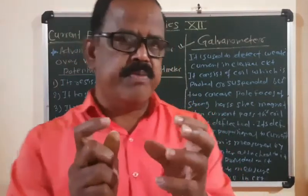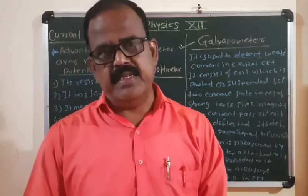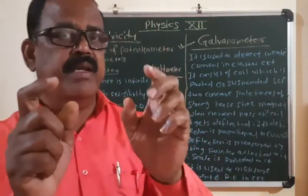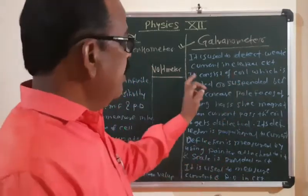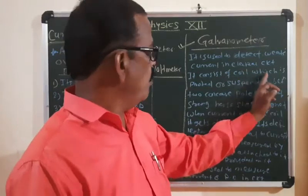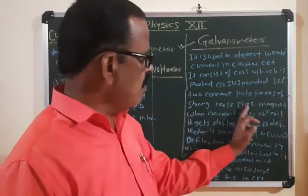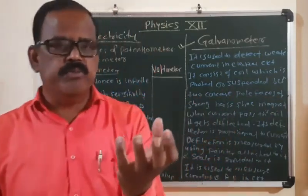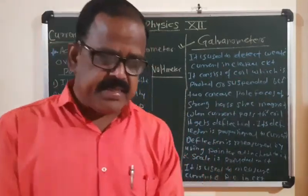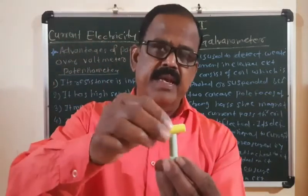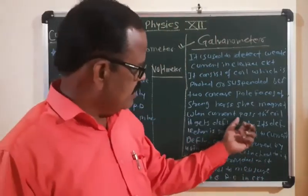The next point in current electricity is galvanometer. A galvanometer is an electrical instrument or device which is used to detect weak current in an electrical circuit. It consists of a coil which is pivoted or suspended between the two concave pole pieces of a strong horseshoe magnet.